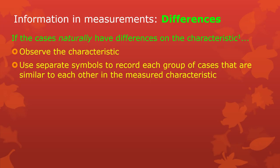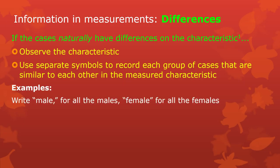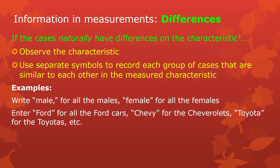So leaves could be different in color, especially during the fall. You use separate symbols — the easiest symbols are just writing the words. If the leaf looks more orange, write orange; if it looks more brown, write brown. All the leaves that are orange get the word orange in your notebook or laptop. Similarly, if you're measuring the sex of individuals, write male for all the males, female for all the females. If you're looking at cars and measuring the make, just write the make of the car.